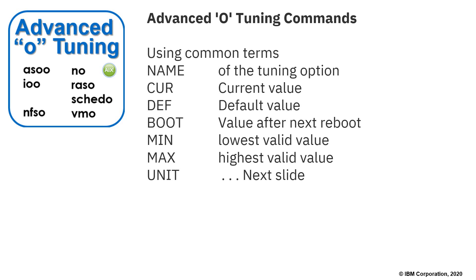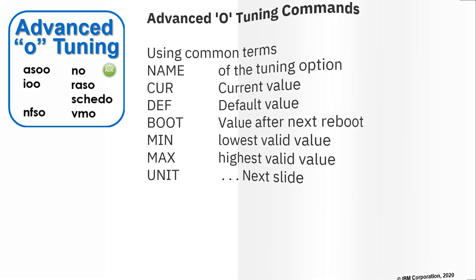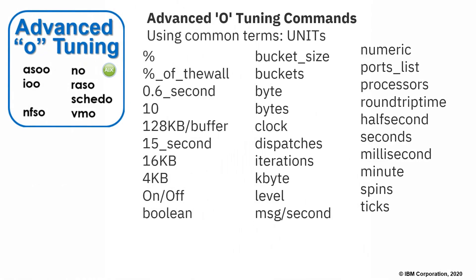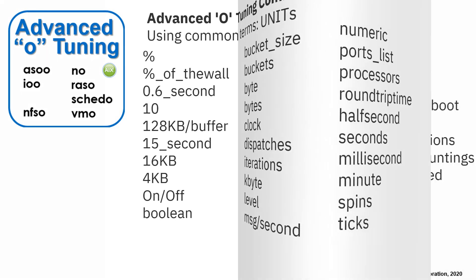The minimum and maximum are useful for working out what's a good value for these various tuning options. And then we have units — there's quite a few of them. All sorts of things in here: bytes, a numeric value, or seconds are typical, but there are all sorts of different things, so you need to go and check for particular options what they're actually counted in.